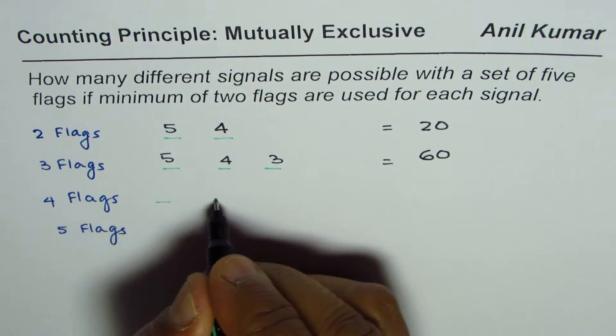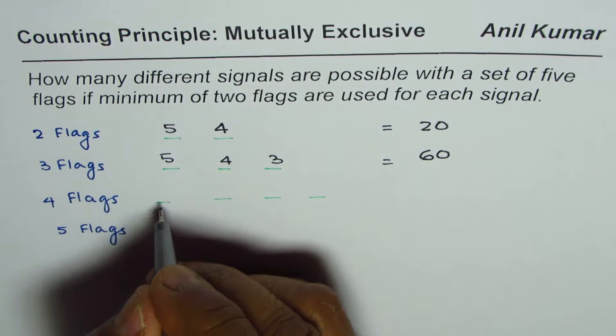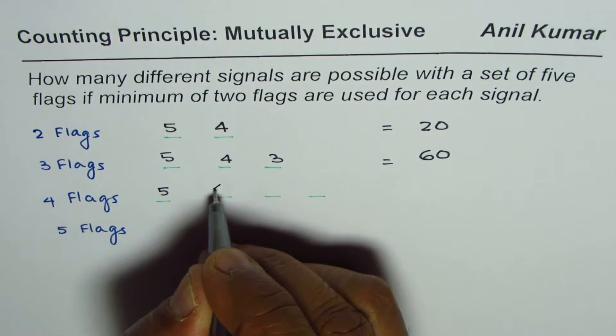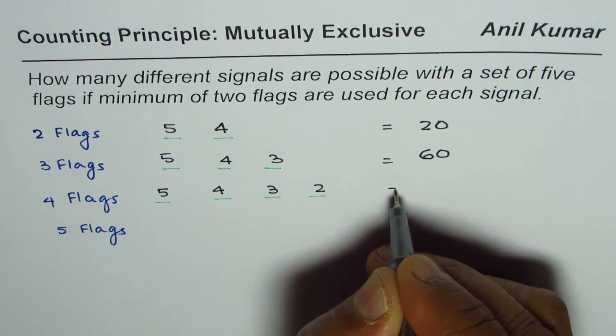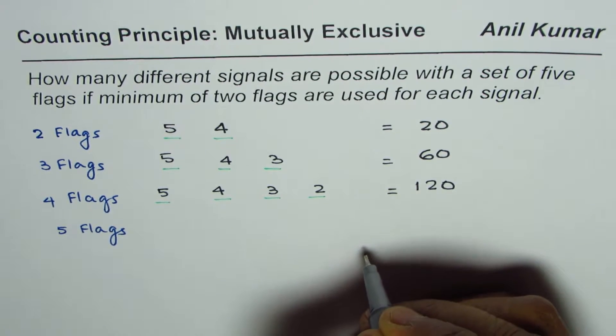If you use four flags, then for the first position you could pick any one of those five. Once you've selected that, then you're left with four, three, and so on. So it is 120 in this particular case.